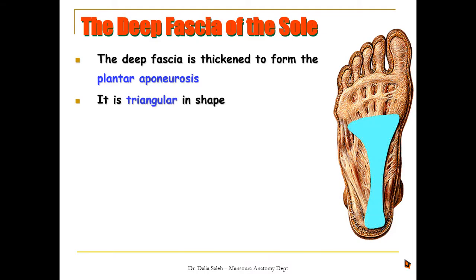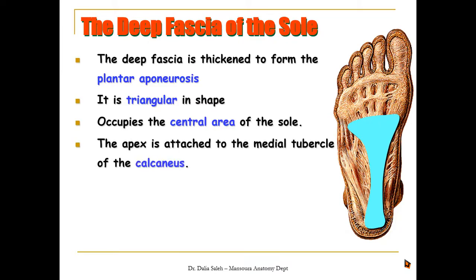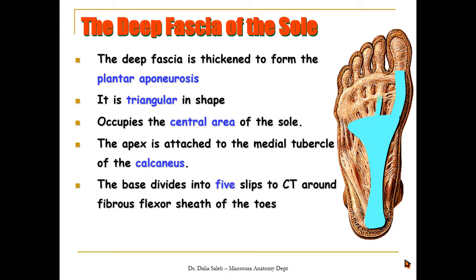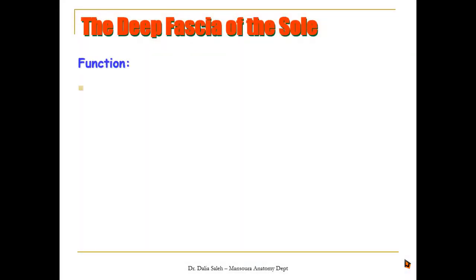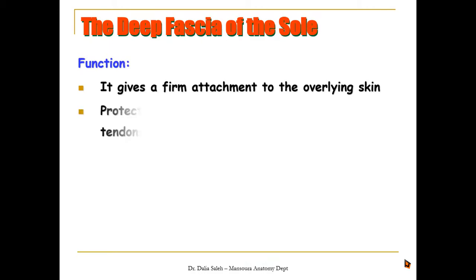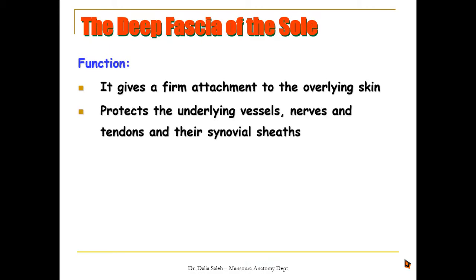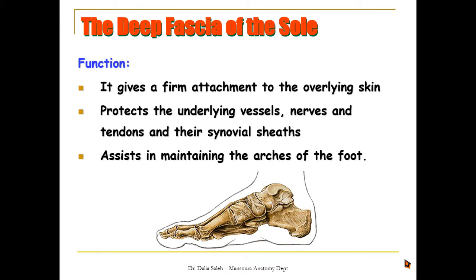The deep fascia is thickened at the sole of the foot to form the plantar aponeurosis, which is triangular in shape and occupies the central part of the sole. It is attached posteriorly by its apex to the calcaneus, while its base splits into five slabs to join the connective tissue around the fibrous flexor sheaths of the toes. The plantar aponeurosis is very important: it gives firm attachment to the overlying skin, protects the underlying vessels, nerves, tendons and their synovial sheaths, and helps maintain the arches of the foot.